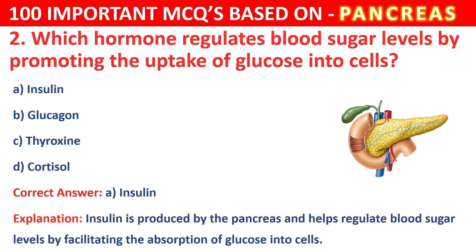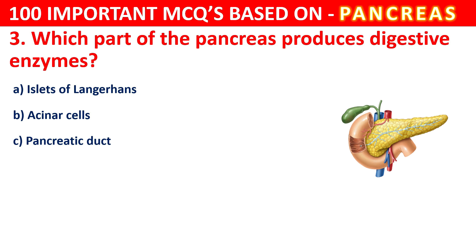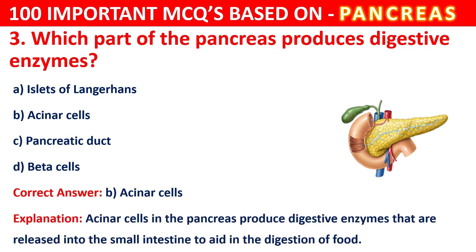Question 3. Which part of the pancreas produces digestive enzymes? Your options are Islets of Langerhans, Acinar cells, Pancreatic duct, or Beta cells. The correct answer is B, that is Acinar cells. The acinar cells in the pancreas produce digestive enzymes that are released into the small intestine to aid in the digestion of food.